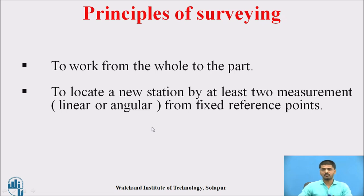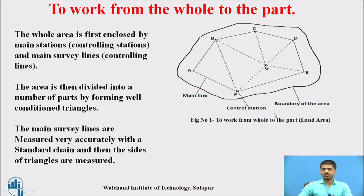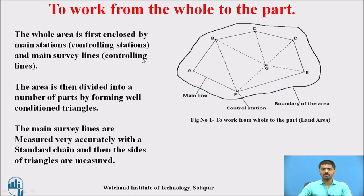Let's discuss the first principle: to work from the whole to the part. Refer to this particular figure. An irregular shaped land area is present. Your first task is to fix your control points — the whole area is first enclosed by main stations, that is A, B, C, D, and so on. These station points are joined by lines called main survey lines, sometimes called controlling stations and controlling lines.